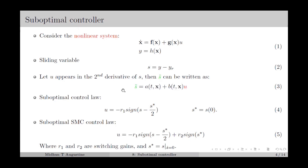We can have a suboptimal control law as in equation number 4, in which r1 is the switching gate and s-star is chosen as the initial value s0. This is one of the suboptimal control laws from a time optimal control perspective. In the case of suboptimal SMC, we modify this control law by adding an initial term r2 times signum of s-star, and we modify s-star as the value of s at s-dot equal to 0. This modified law we call the suboptimal SMC control law, which is basically an extension of the original control law.